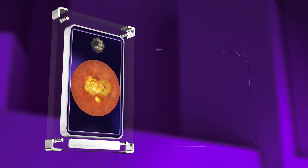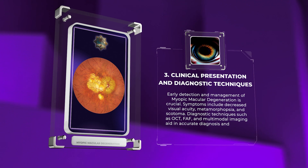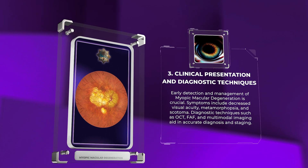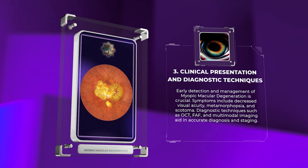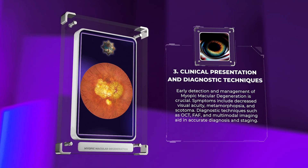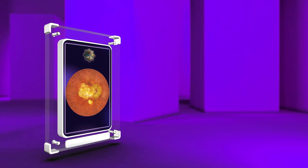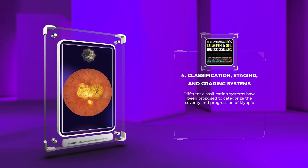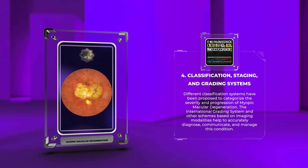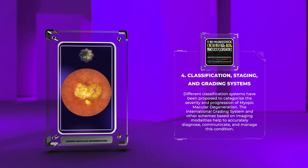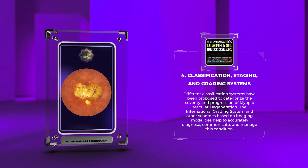Early detection and management of myopic macular degeneration is crucial. Symptoms include decreased visual acuity, metamorphopsia, and scotoma. Diagnostic techniques such as OCT, FAF, and multimodal imaging aid in accurate diagnosis and staging. Different classification systems have been proposed to categorize the severity and progression, and the international grading system and other schemes based on imaging modalities help to accurately diagnose, communicate, and manage this condition.